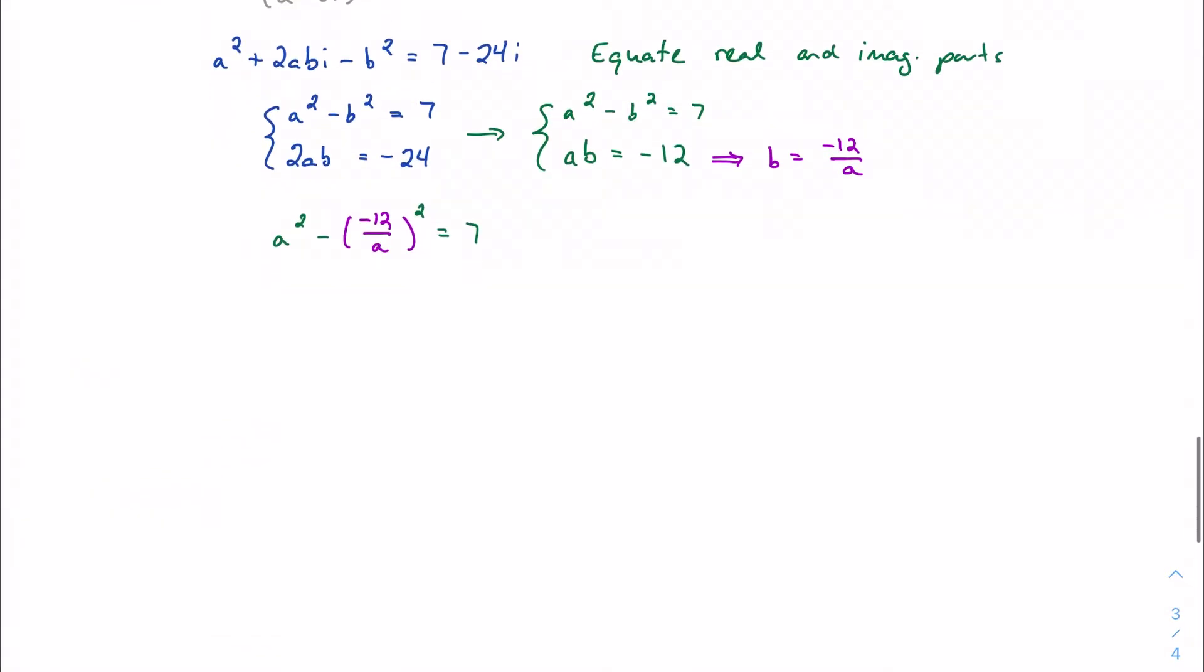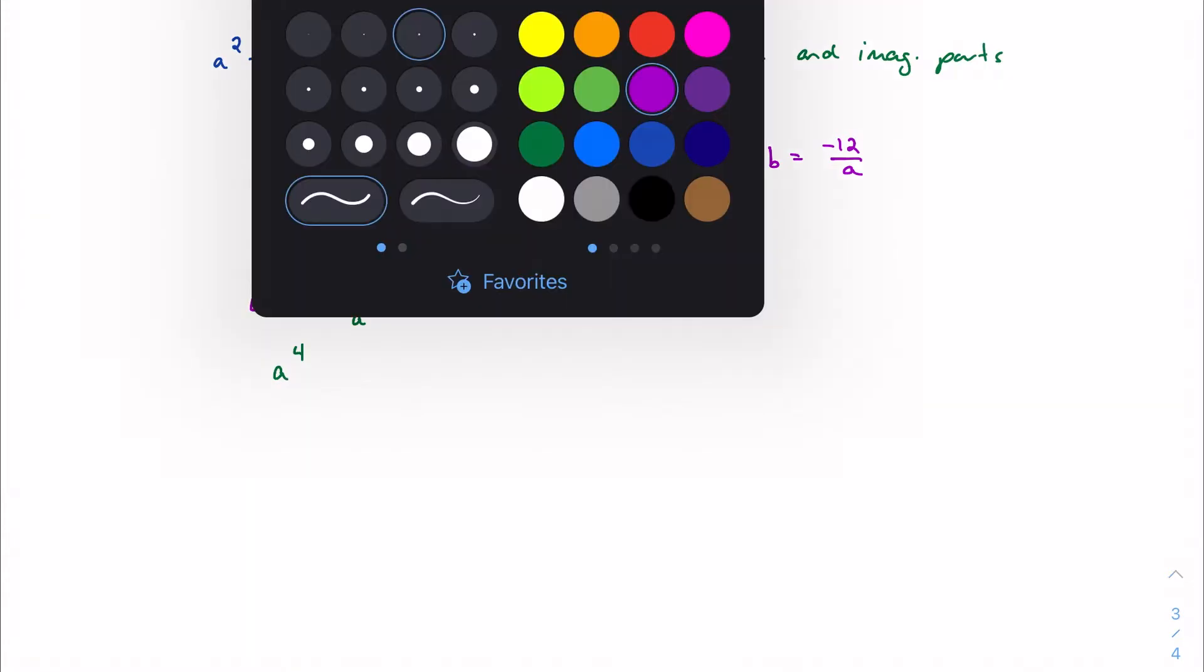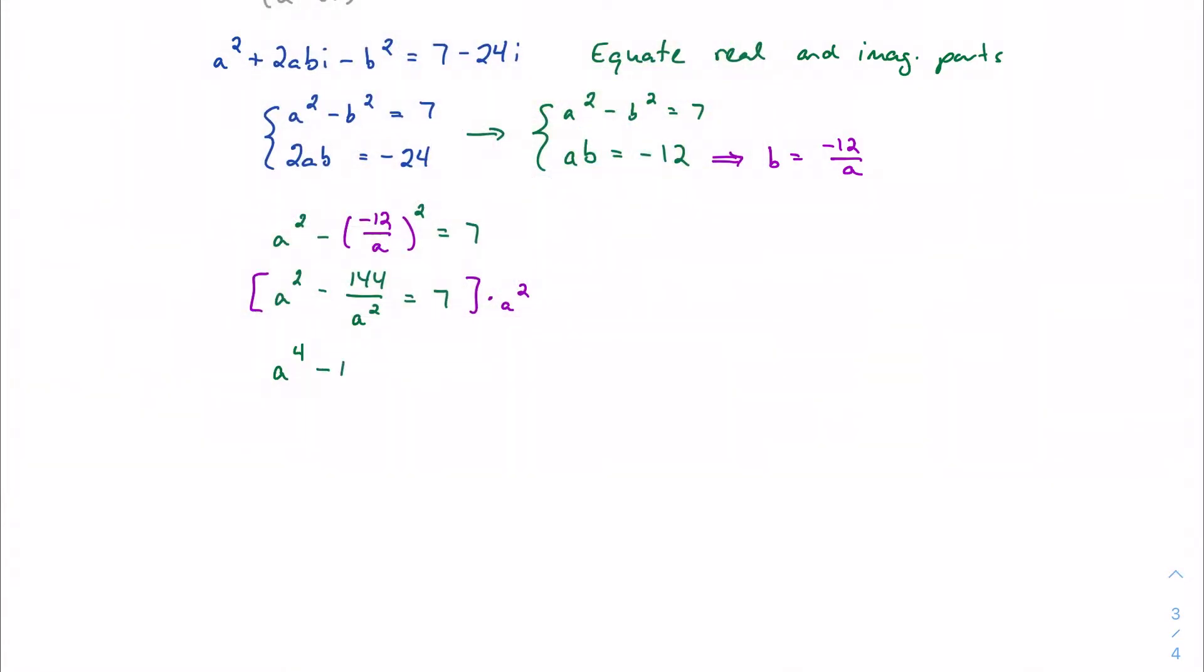Simplifying a little bit again, this is going to give me 144 over a squared. Let's condense this into one expression and multiply everything by a squared: a to the fourth minus 144 equals 7a squared. And now we need to solve this.